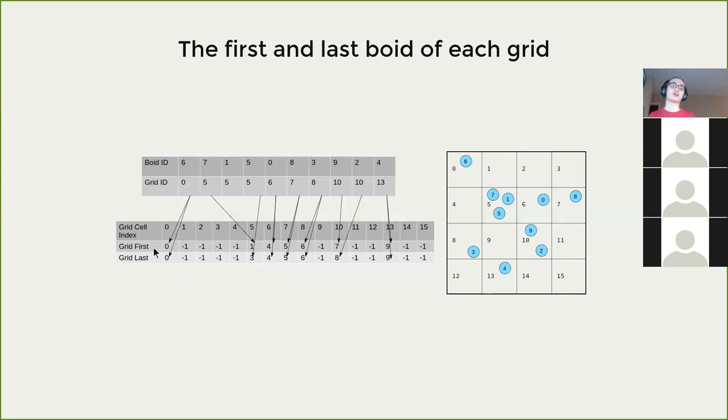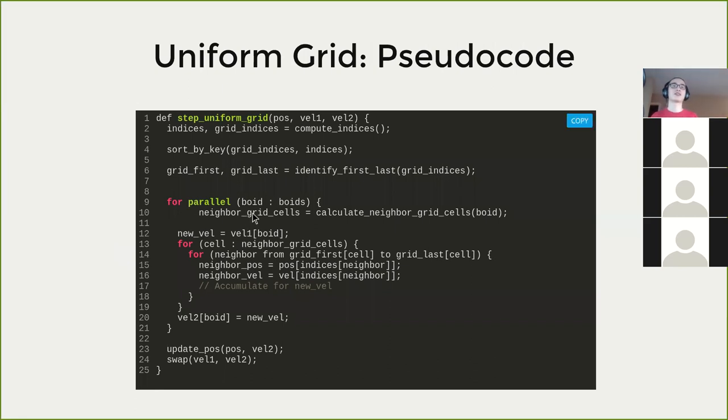Also the paper called those two arrays begin and end, which is really odd from a C++ programmer's perspective. So I changed them to first and last. Here is the pseudocode. The first step is compute indices. As we said before, the boid indices are just sequence of numbers 0, 1, 2, 3 generated by iota and the grid indices we calculated. We calculated by calculating the 3D form position, calculate the three dimensional grid indices and then linearize them. Then we sort them by key, find the first and last array.